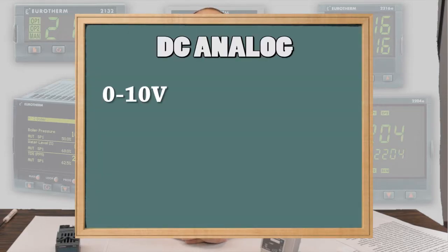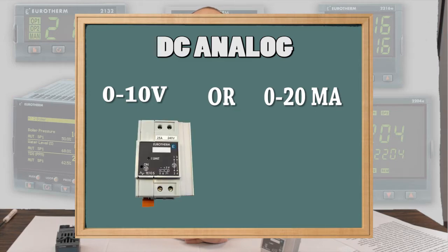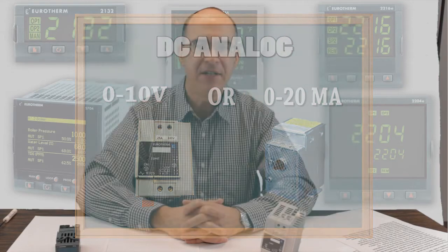The DC analog output type provides a variable analog signal, typically in the range of 0 to 10 volts DC or 0 to 20 milliamp DC. These output types and ranges are configured in the temperature controller to match the input signal requirements of the power controller. This type of output signal is usually used to control an SCR power controller or valve. The higher the output signal, the more power is applied to the load.